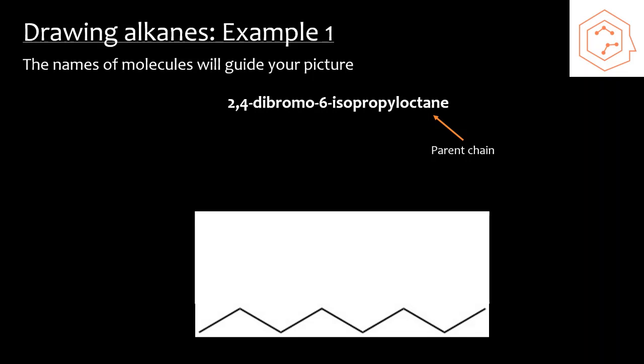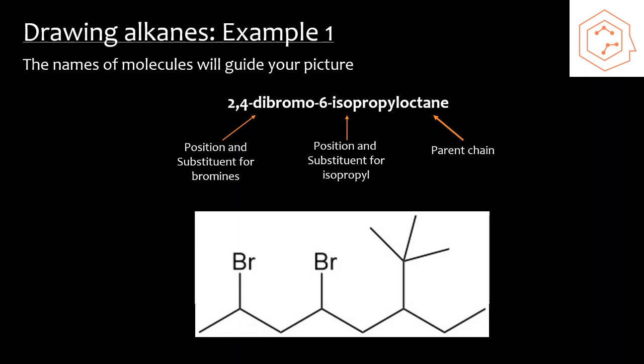Next, we're going to add in our substituent groups. First, we see that we have two bromines at the two and four position. So we can add those in just like that. I included them on the left side. You can include them on the right side. As long as they're consistent with your numbering, either way will be technically correct. Finally, we're going to want to add in the sixth isopropyl. So it's the isopropyl at the sixth position. And just like that, we've now included all of the substituents. We have our parent chain, and so the drawing of the molecule is complete.